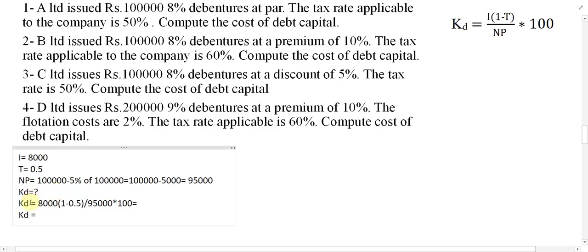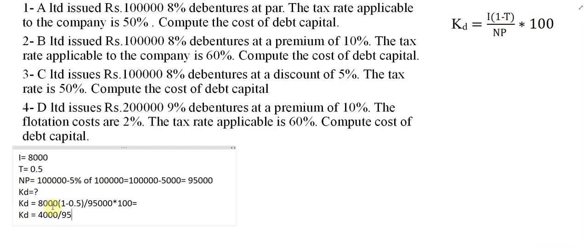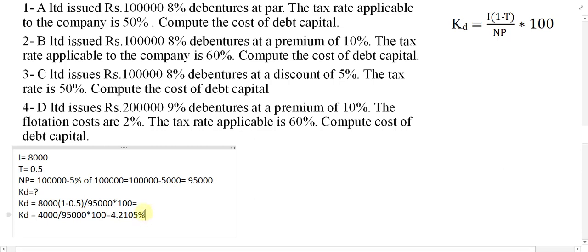From 1 minus 0.5 we get 0.5. So 0.5 into 8,000 becomes equal to 4,000. Then 4,000 divided by 95,000, multiplied by 100. So the cost of debt capital for example number three is equal to 4.1 percent. If it is a premium, cost is less; if it is a discount, cost is more, as compared to the previous example.